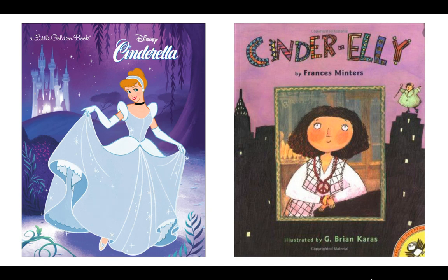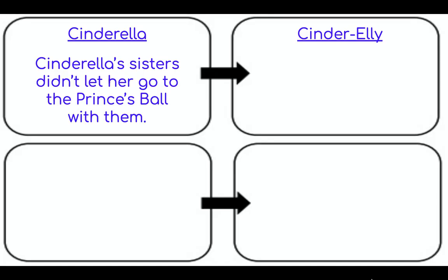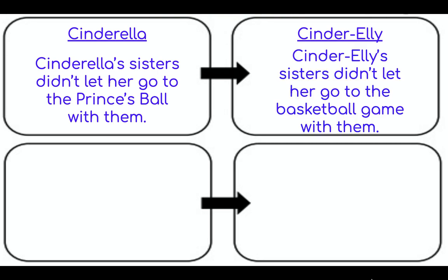I'm going to give you an example based on two books that you've read in the last week. You've read Cinderella and Cinderella — both fairy tales based on a girl that was left out. In the first column I've labeled Cinderella, and that's the piece of that text I found a connection to. The first connection was when Cinderella's sisters didn't let her go to the princess ball with them, and I remember reading in Cinderella that her sisters didn't let her go to the basketball game with them. So it doesn't have to be an exact match, but it does have to have something in common.